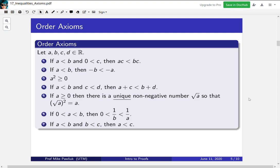The fourth one says that you can add two inequalities together. The fifth one says that if a is non-negative, then there is a unique non-negative number square root of a.